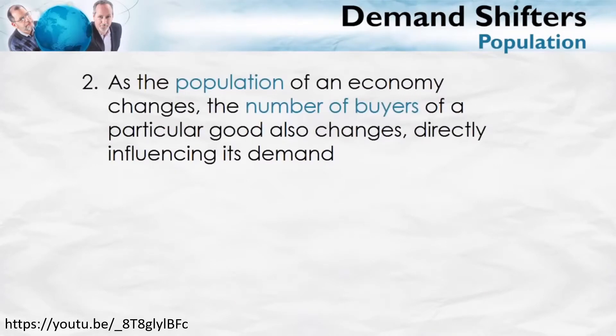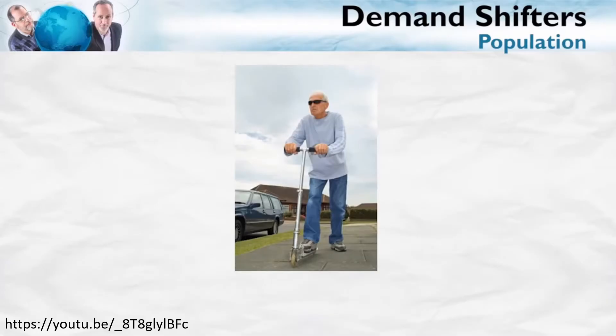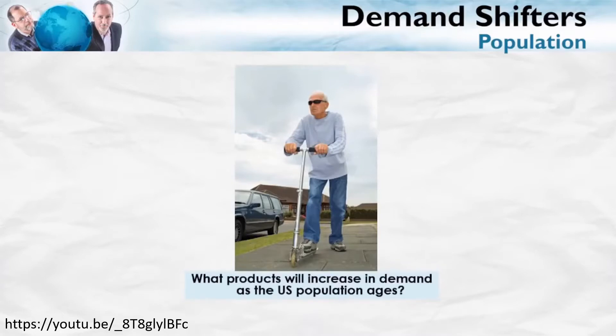Another demand shifter is population. As the population of an economy changes, the number of potential buyers of a particular good also changes. For instance, what happens to the demand for diapers in Russia as birth rates drop? That demand is going to decrease. In the United States, the baby boomers are getting older, creating many more elderly individuals in the population. As the number of elderly goes up, we'd expect an increase in the demand for cancer drugs — indeed, pharmaceutical firms have invested more in R&D for drugs for older people.